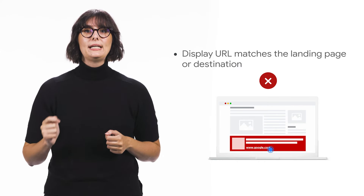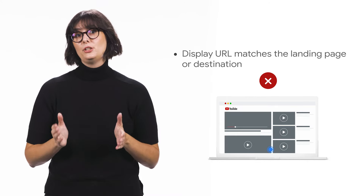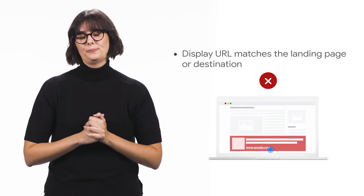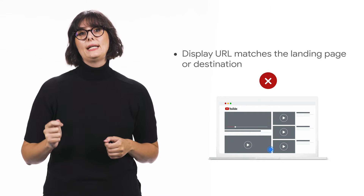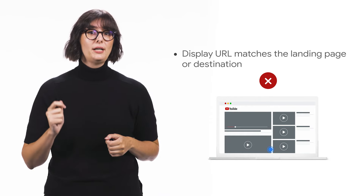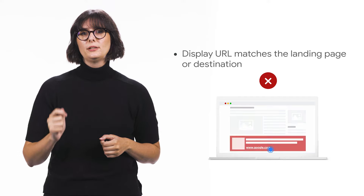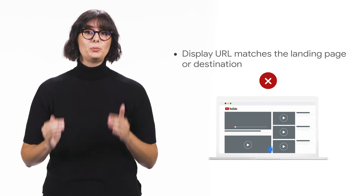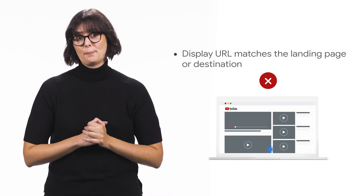Ads should also accurately reflect where the user is being directed, so make sure the display URL in your ad matches the destination or landing page that the user is taken to. For example, if your ad leads to a page within the example.com website, your ad should include example.com as a display URL and not a different domain like google.com.